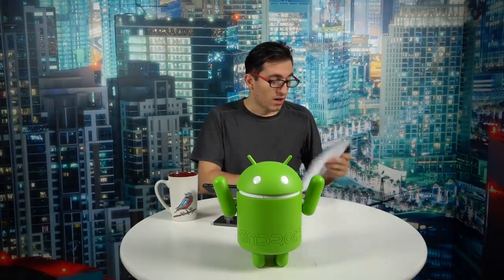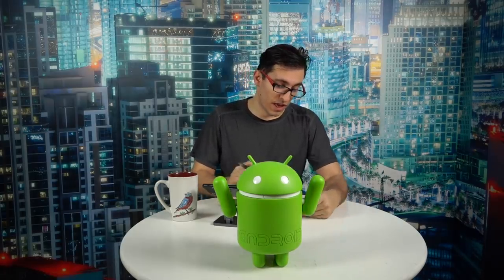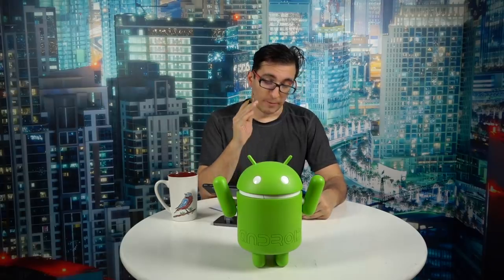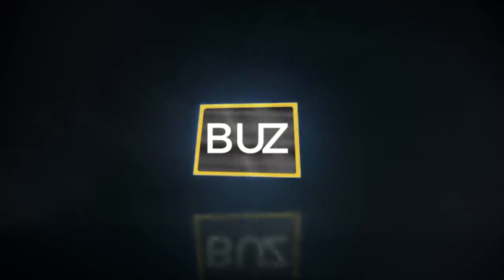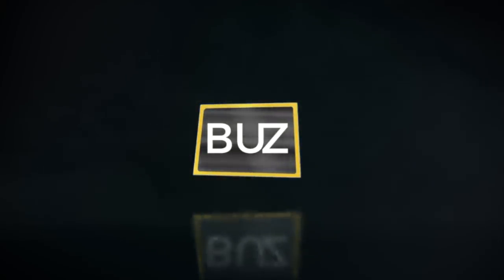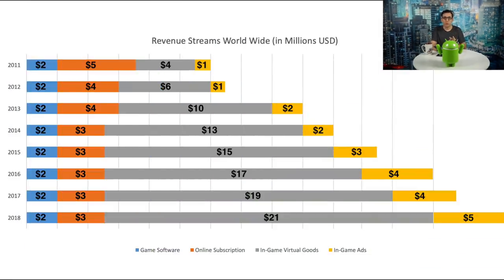When we get back on this episode of Game Basics, we're going to talk about revenue and business models in games. Let's see what are the revenue streams worldwide and how does that look. Blue would be game software, orange is subscription, gray is virtual goods, and yellow is in-game ads.